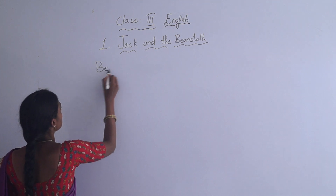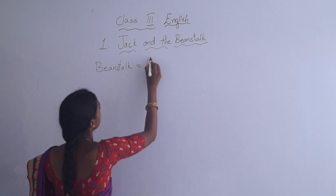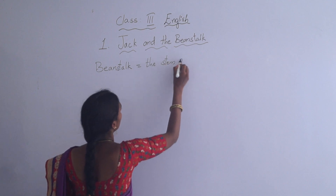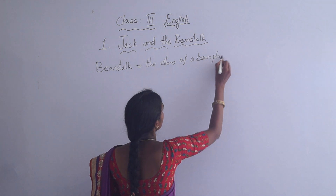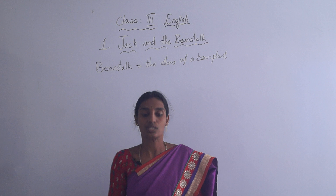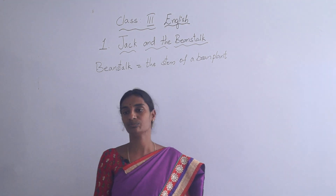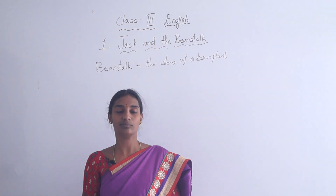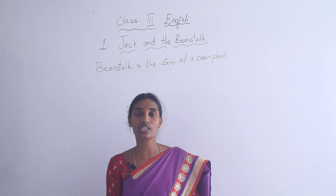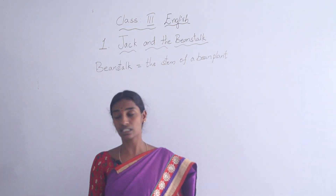We will know the meaning of bean stalk. Bean stalk means the stem of a bean plant. The stem grows very high — the creeper will go up very long. Here, Jack and the bean stalk: today we are going to learn about what is going to happen between Jack and the bean stalk. What is the speciality, actually? So let's see.